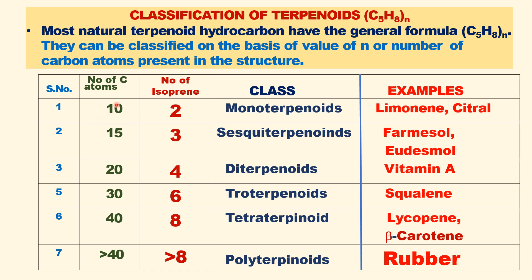So the carbon count for monoterpenoids is 10, since the formula is (C5H8)n — so n=2 gives C10. Examples include limonene and citral. If there are three isoprene units, it is called a sesquiterpenoid — for example, farnesol. If four isoprene units, it is a diterpenoid — for example, vitamin A, which is a terpenoid. If n equals six, it is a triterpenoid. If n equals eight, it is a tetraterpenoid — examples include lycopene and beta-carotene. If n is greater than eight, it is polyisoprene, also called polyterpenoids, which is known as natural rubber.